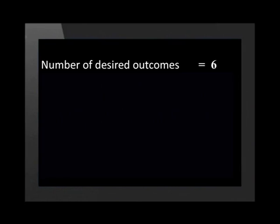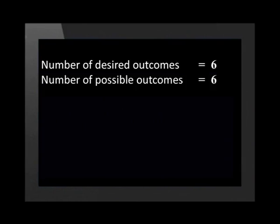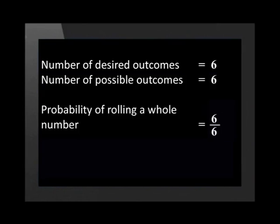We now know that an event that will not occur has a probability of 0. Remember, the probability scale goes from 0 to 1. This means that if an event is definitely going to happen, it has a probability equal to 1. For example, the probability of rolling a whole number on a dice is equal to 1. The number of desired outcomes is 6 and the number of possible outcomes is 6, therefore the probability is 6 over 6, which equals 1.